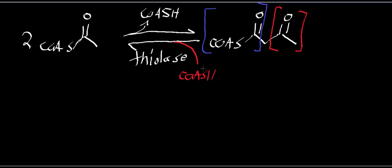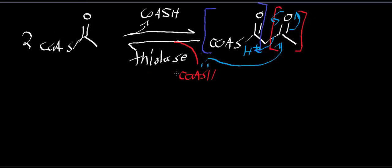Let's look at the mechanism quickly, because we'll see it again in the catabolism. Essentially, a lone pair does a nucleophilic attack, the electrons kick back down, the bond comes out and abstracts a proton. In the reverse direction — which would be catabolism of ketone bodies — you'd end up with two acetyl-CoA. But in biosynthesis, you end up losing a CoA and producing acetoacetyl-CoA.